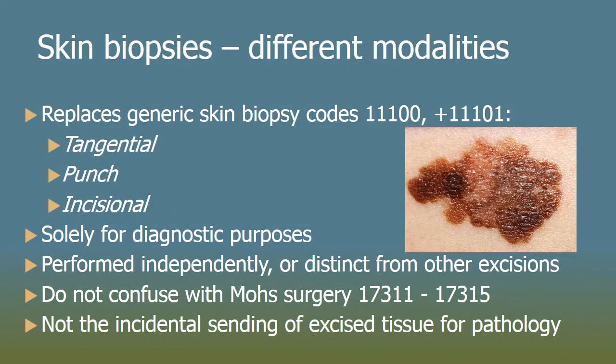Another type of biopsy: skin biopsies. Previously we had a generic skin biopsy code — 11100 and 11101 for additional lesions. Now we have codes for the actual modality of tissue removal: tangential, punch, and incisional. These are different ways of removing tissue from the skin specifically to be sent to pathology for diagnostic purposes, not for removal purposes.